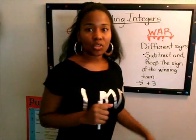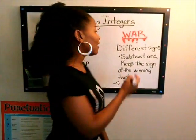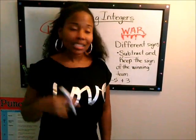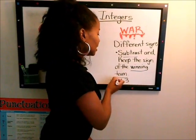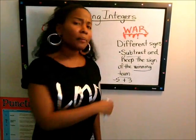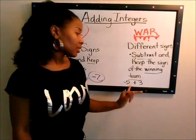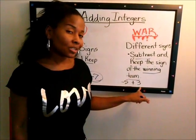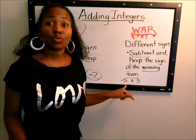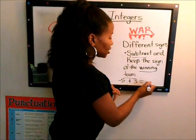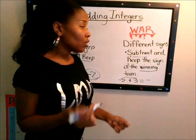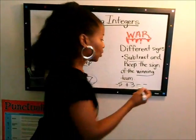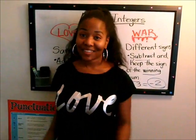Now we have a different situation. What happens if it's a war situation? That means I have different signs. The rule is subtract and keep the sign of the winning team. Look at my example: I have negative five plus three. Who has more on their team? The negatives do, so right away I know my answer is going to be negative something. The rule says I then subtract — what's five take away three? It's two. So my answer is negative two.